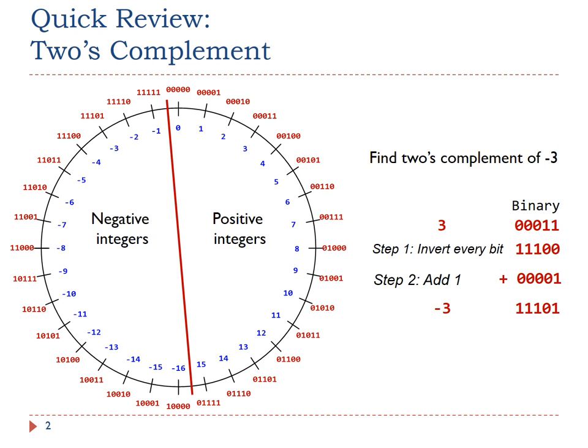The final result is 11101, which is the two's complement representation of negative three.